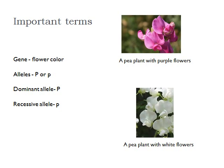There are some pea plants that have purple flowers, and there are some pea plants that have white flowers. So there is a form of the gene that codes for purple flowers, and there is a form of the gene that codes for white flowers. These alternate forms of the gene are called alleles.